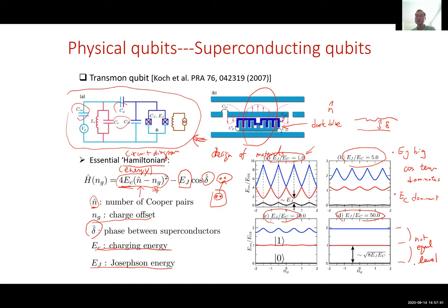Unlike a harmonic oscillator, which has equal energy level spacing, the transmon energy levels have unequal spacing. This is useful: when you shine a laser resonant with the transition between levels zero and one, it only excites that transition. The transition to level two is off-resonant and won't be excited. The key takeaway is the Hamiltonian giving rise to energy levels where the lowest two serve as the qubit.